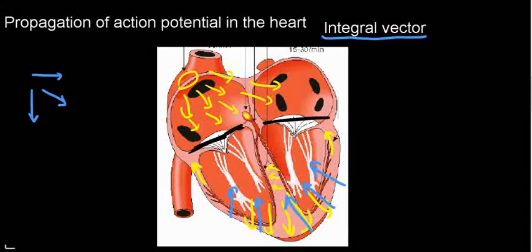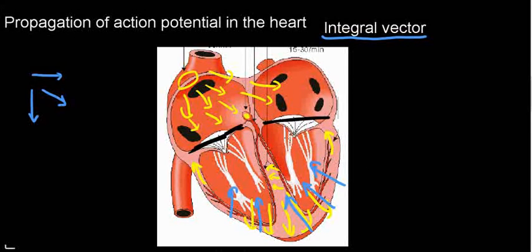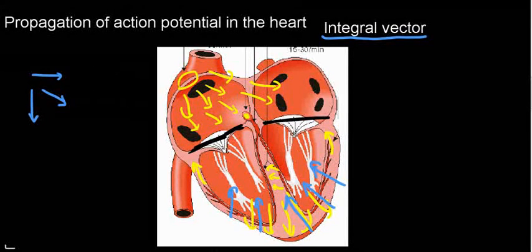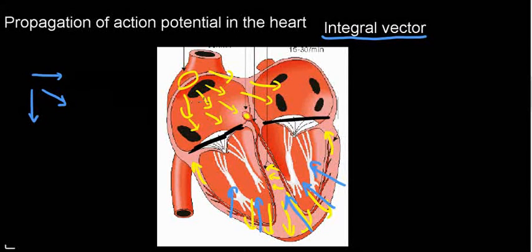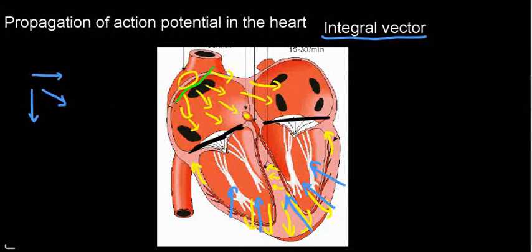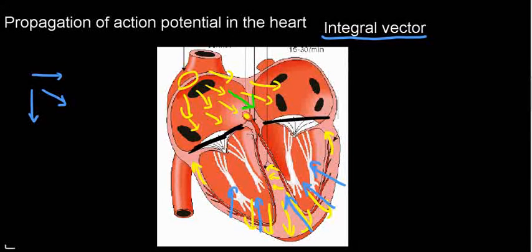So before we understand the Eindhoven Triangle, let's see if we can add the vectors up and get an integral vector. The integral vector in this instance is really easy to determine. This is the general direction I can expect, and if I also address the magnitude, I'll get something along this size. This is the first electrical event.